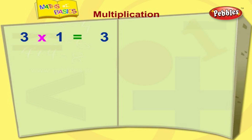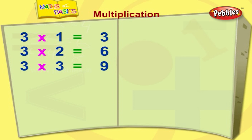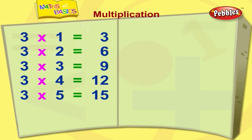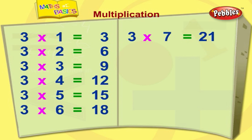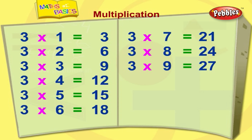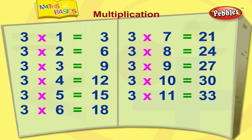Three ones are three. Three twos are six. Three threes are nine. Three fours are twelve. Three fives are fifteen. Three sixes are eighteen. Three sevens are twenty-one. Three eights are twenty-four. Three nines are twenty-seven. Three tens are thirty. Three elevens are thirty-three. Three twelves are thirty-six.